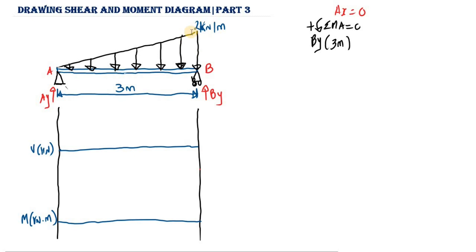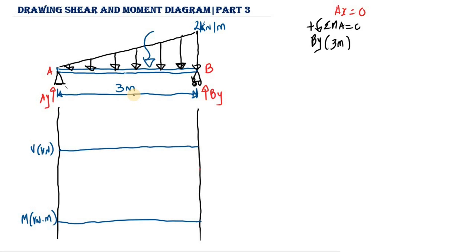For the distributed load, we need to resolve it into its resultant by taking the area of the triangle: one-half multiplied by the height of 2 kN/m multiplied by the length of 3 m, giving a resultant of 3 kN. This resultant force is located at one-third of the length from the roller support, which is one-third of 3 m from B.